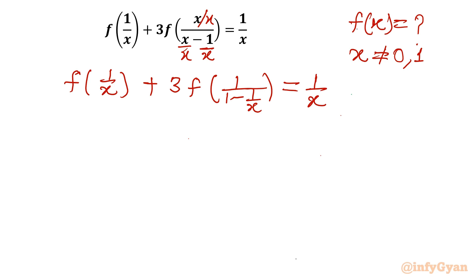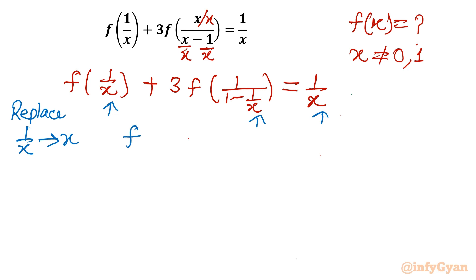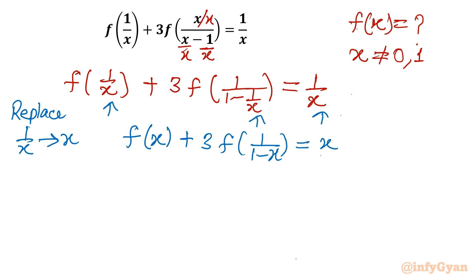Now I will use a substitution — a better word is replacement. I will replace 1 over x with x. As you can see, 1 over x appears repeatedly, so it is better to replace it. So we get f of x plus 3 times f of 1 over 1 minus x, equal to x. And this I will call equation number 1.